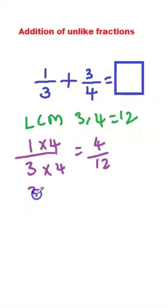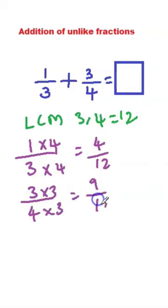Next I will write here 3 by 4. 4 times 3 equal to 12. So we will multiply with 3. We will get 9 by 12.